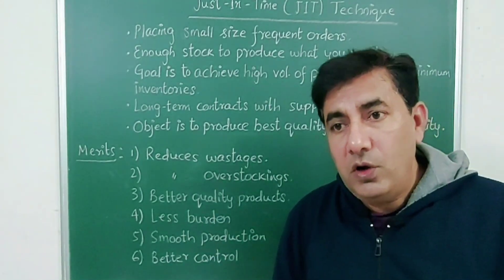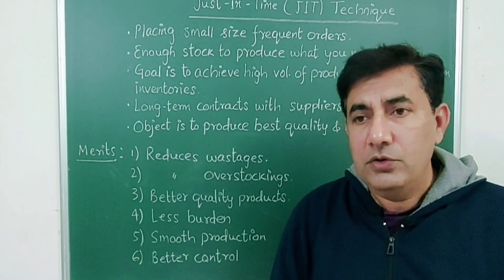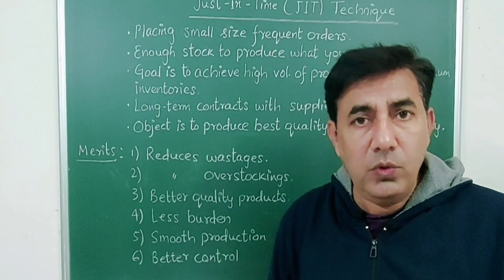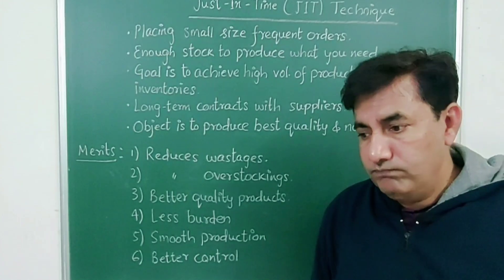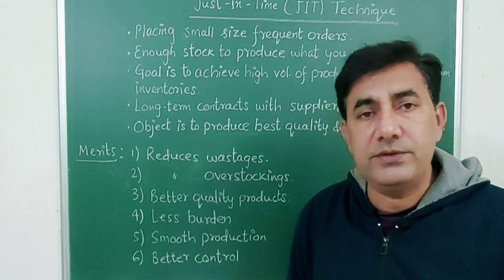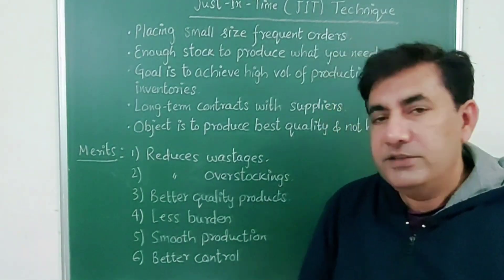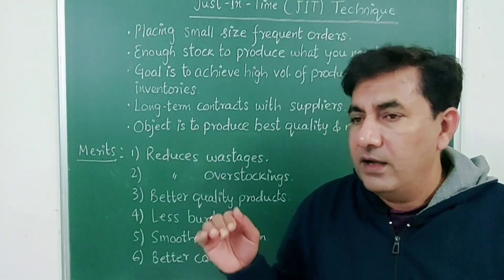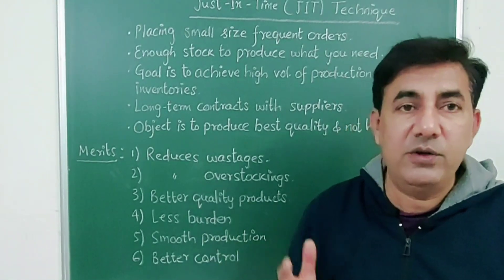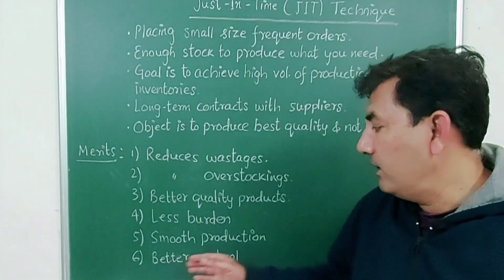Less burden. When you do not have overstocking, stocks are not too much, the load is not too much of stocks, then obviously the company will not feel so much burden, will not feel so much load, will not feel so much liability. So it can have smooth working, the company's operations will become quite smooth. Then smooth production, so that is obvious. As much as you need, that much you have to purchase. And but one thing to note, just in time, you should get timely supply so that your production process is not hampered at all. Then better control. If we talk about controlling stocks, if stocks are not too much, then obviously your control also becomes smooth, becomes easier, because you don't have too much stocks.